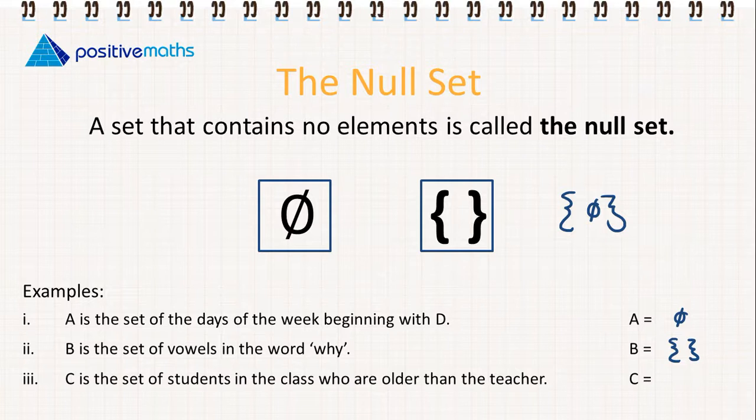C is the set of students in the class who are older than the teacher. In most cases, again, this will be the null set. I recommend you choose which symbol you prefer to use and stick with that, use it all the time, but just be familiar that there are two different symbols for the null set.